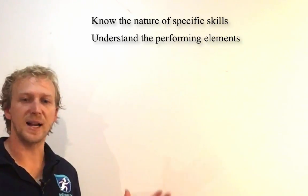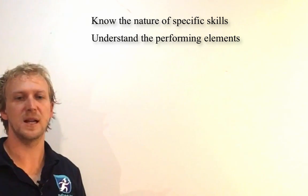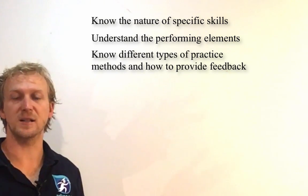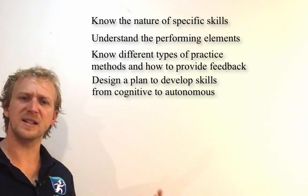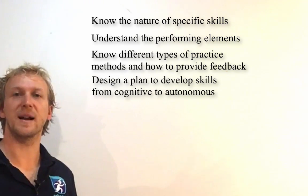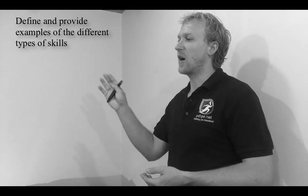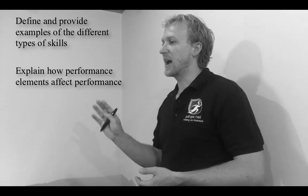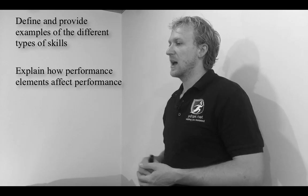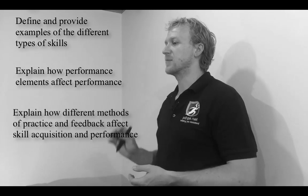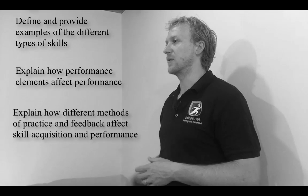For this particular dot point, our sub-goals are for you to know the nature of specific skills, to understand the performing elements, to know the different types of practice methods and how to provide feedback, and to be able to design a plan to develop skills from the cognitive stage through to the autonomous. The success criteria includes defining and providing examples of different types of skills, explaining how performance elements affect performance, and explaining how different methods of practice and feedback affect skill acquisition and performance.